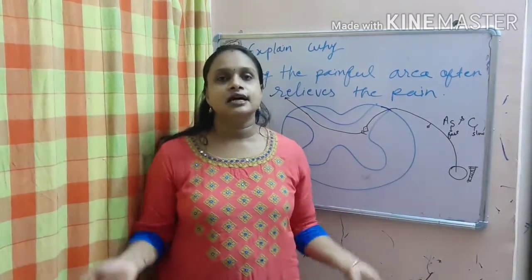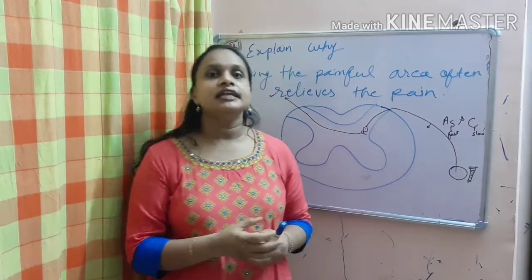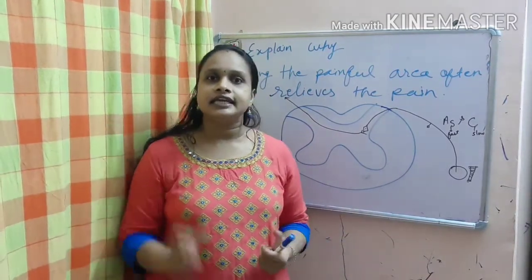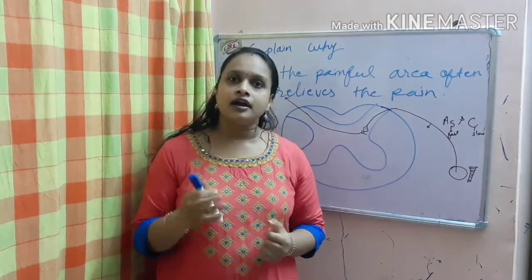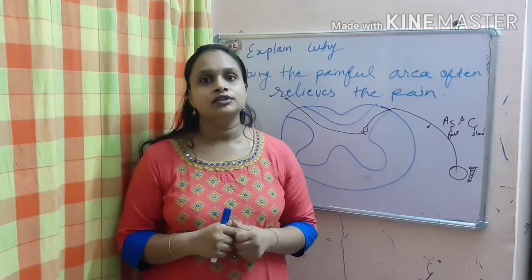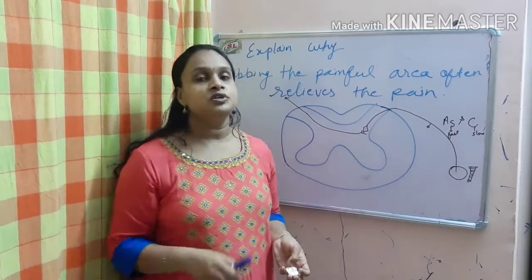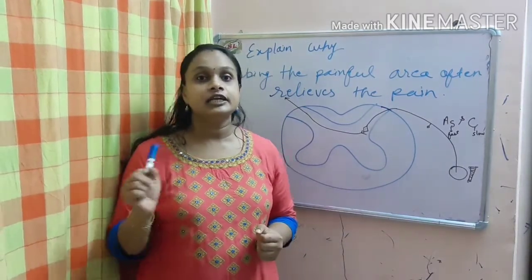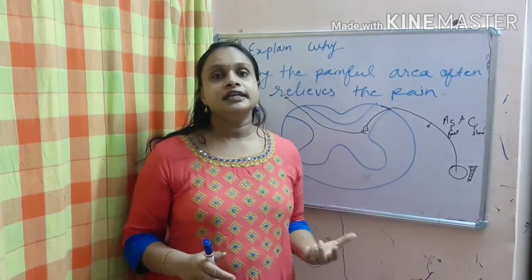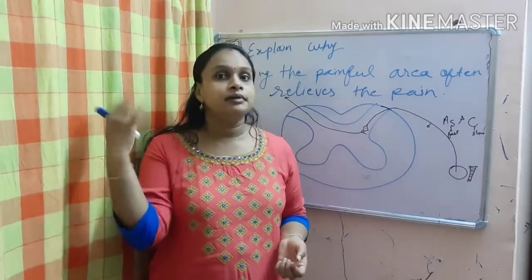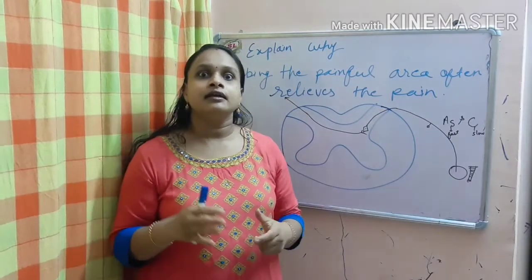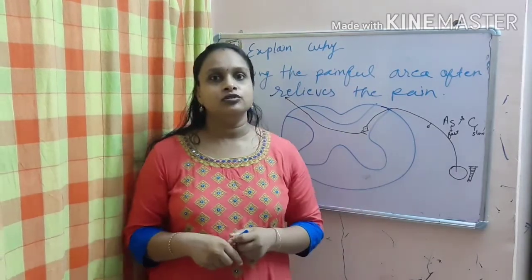There are other examples also which can activate analgesia by this gate control theory. You have heard about acupressure — that also works by gate control theory. Electrical nerve stimulation, that is TENS (trans-electric nerve stimulation), and counter-irritants. Some ointments you buy from the market — they are not analgesics by themselves, they just stimulate the gate control theory.